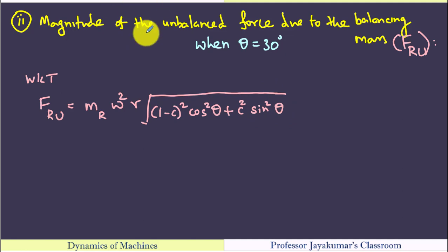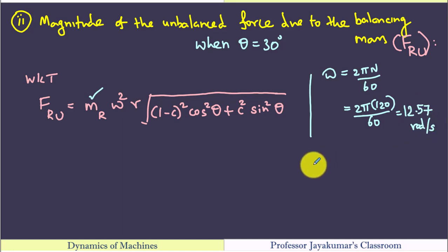We know that the resultant unbalanced force formula. In this we know M_r 150 kg. So we need to find omega. Omega is equal to 2 pi n by 60. The RPM is given as 120 RPM. We will get the omega value as 12.57 radians per second.